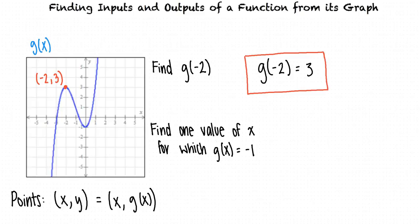Next, we need to find an input of x that gives an output of negative 1. To do this, we must find a point with y-coordinate of negative 1. On this graph, it looks like there are two points that have y-coordinates of negative 1. That's right. There are two points: 0 comma negative 1 and negative 3 comma negative 1. Therefore, there are two possible correct answers for this question. One value of x for which g of x equals negative 1 can be negative 3, or one value of x for which g of x equals negative 1 can be 0.